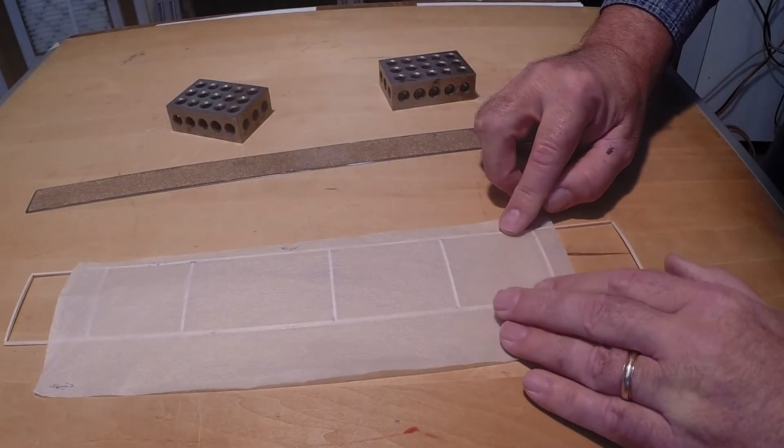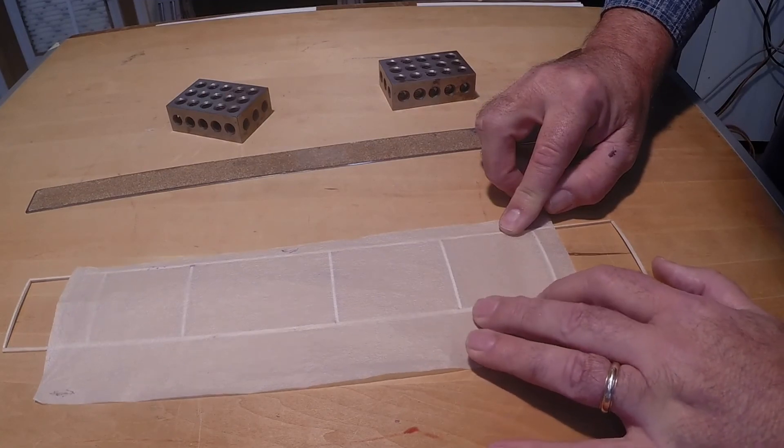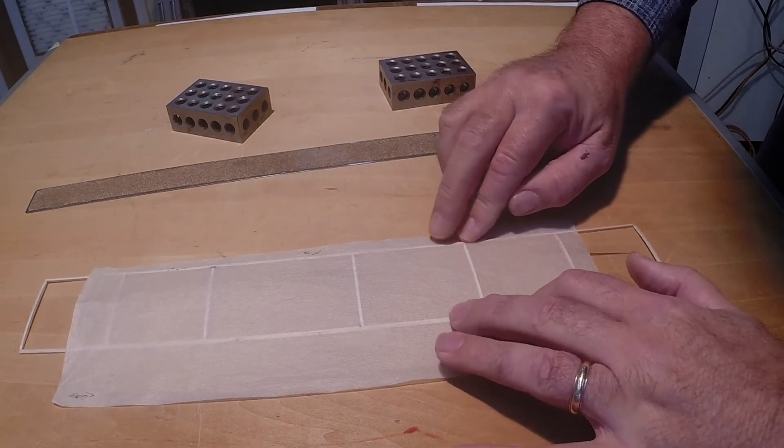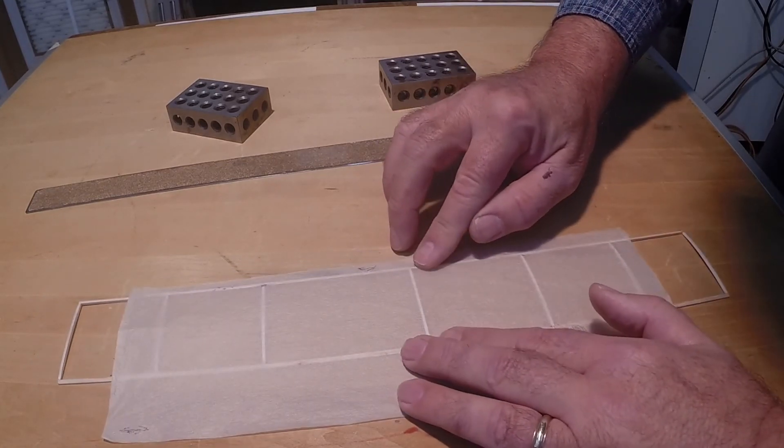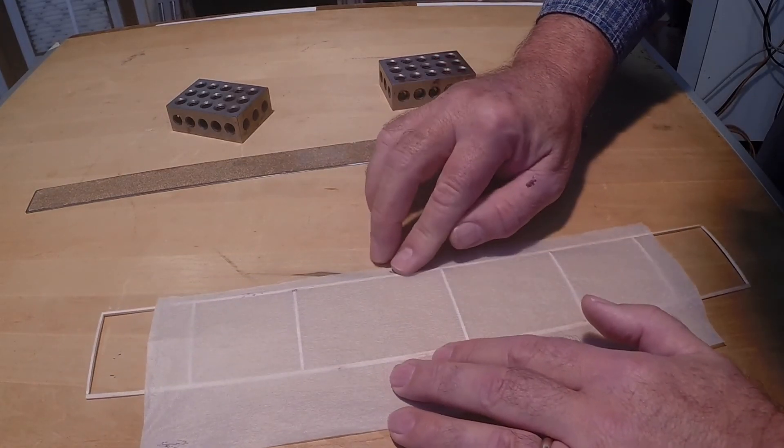Allow the tissue to drape over the structure and gently pull it to remove any sags. Press the tissue onto the balsa parts that have adhesive. Allow the adhesive a few minutes to dry.